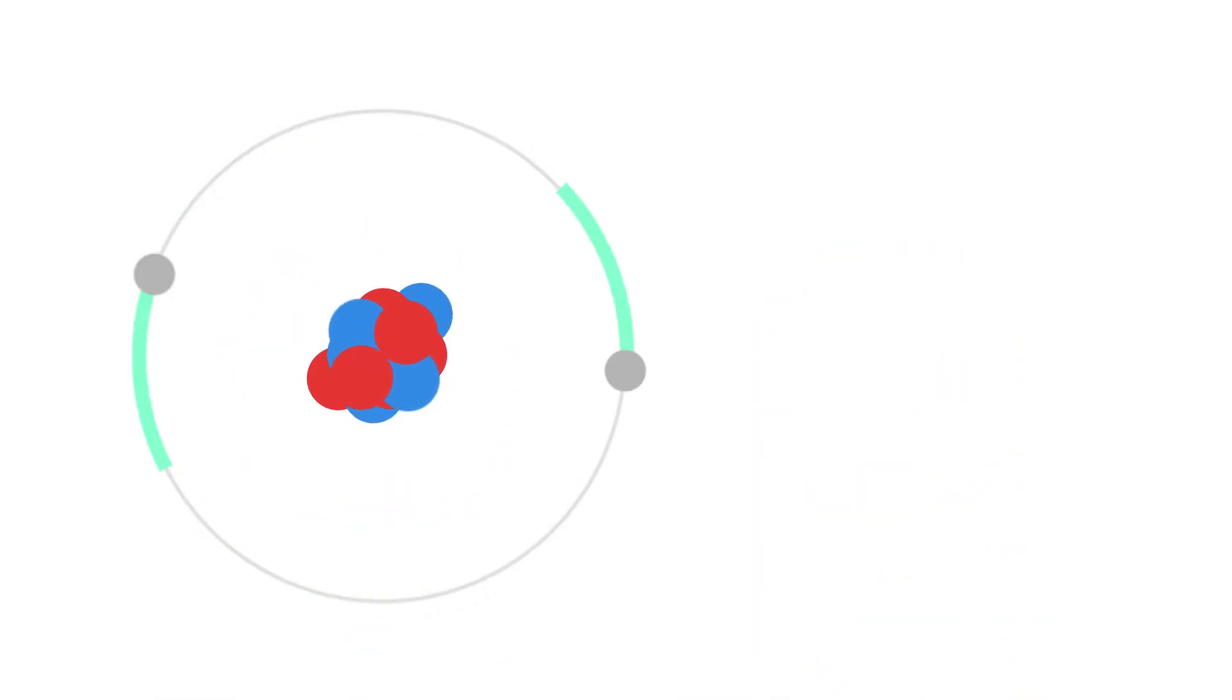If there are too many neutrons in a nucleus, it might be so massive that it becomes unstable, and liable to split up into smaller atoms. This is known as radioactivity.